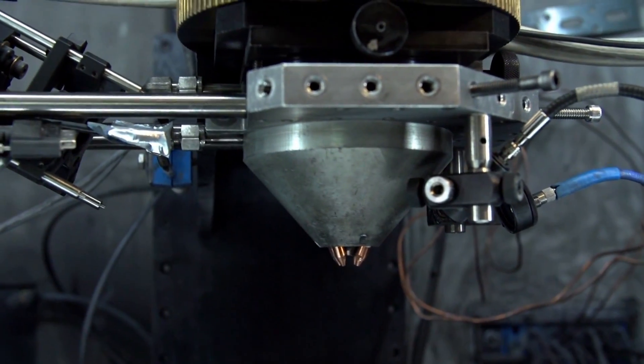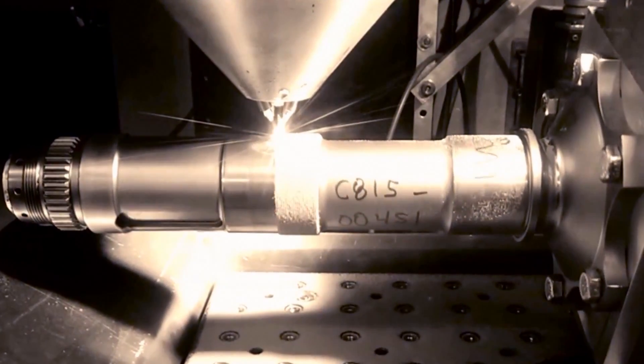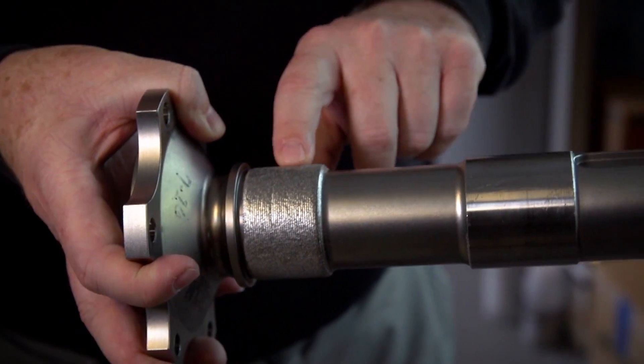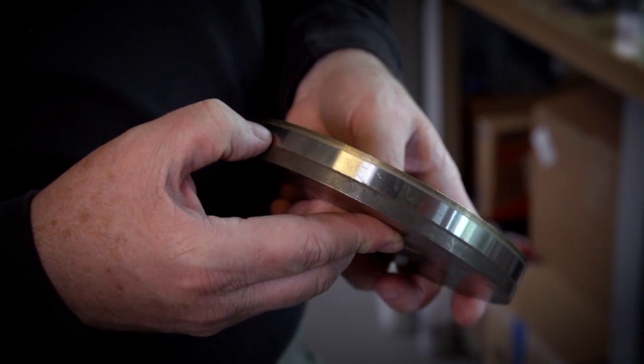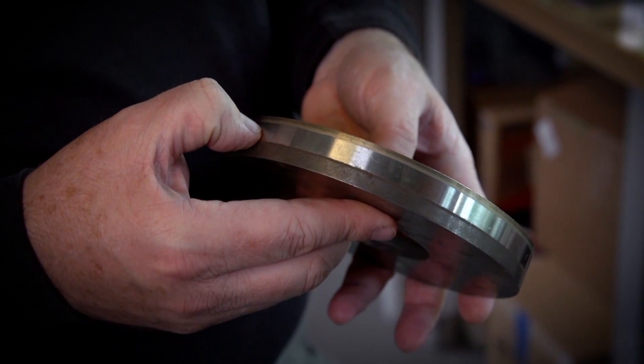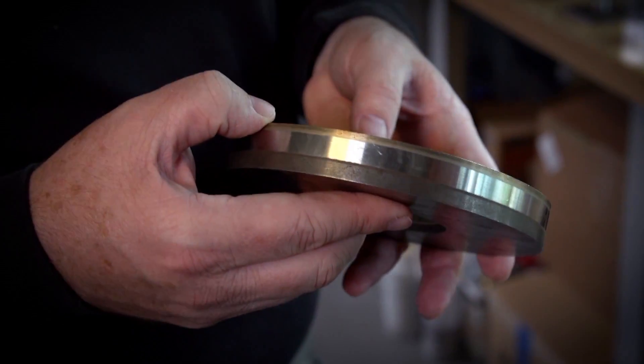It's like welding with uncanny accuracy. The machines can create new objects and repair old ones. They can even use multiple materials on a single build—metals like titanium, stainless steel, aluminum, and nickel alloys.